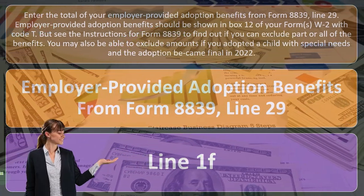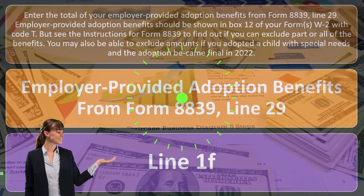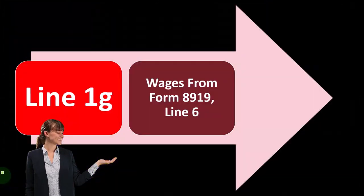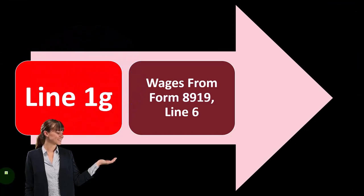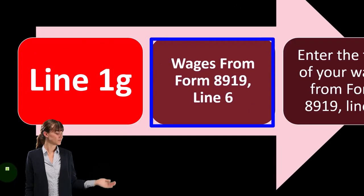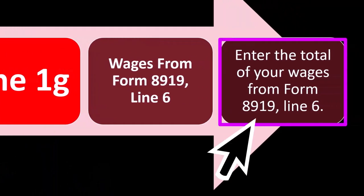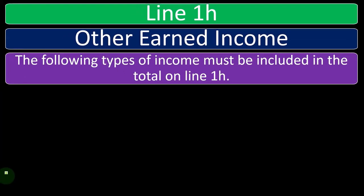You may also be able to exclude amounts if you adopted a child with special needs and the adoption became final in 2022. Line 1G: wages from Form 8919, line 6. Enter the total of your wages from Form 8919, line 6.